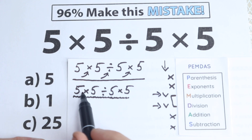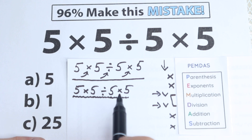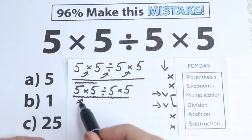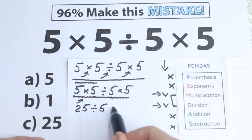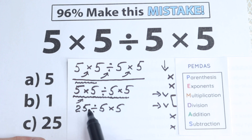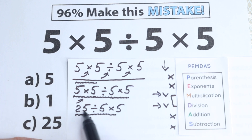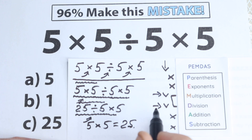Now we need to understand what to do first. According to PMDMC we look at the first sign from left to right — and the first sign from left to right is this multiplication. So we start with 5 times 5, which equals 25. Then we have division by 5 and times 5 remaining. The next first sign from left to right is division, so 25 divided by 5 equals 5. Then 5 times 5 equals 25. Option C is the correct answer.